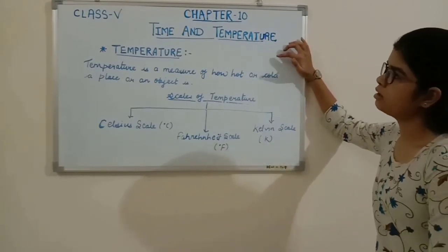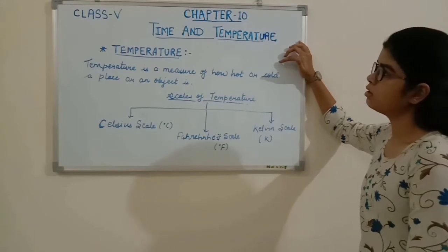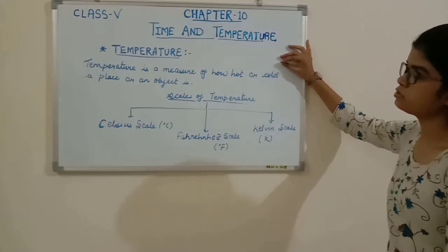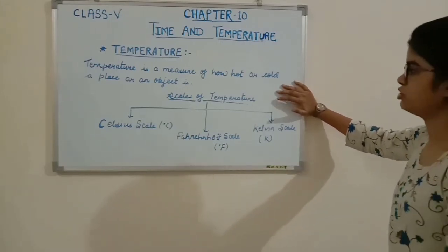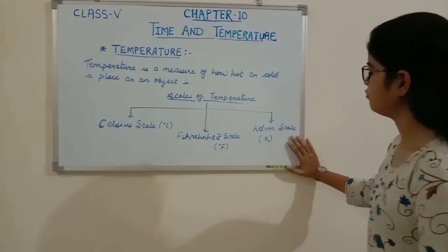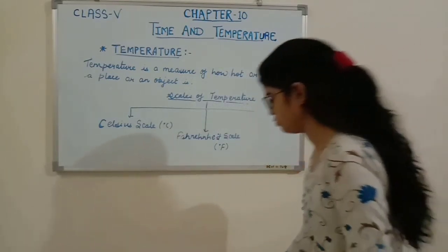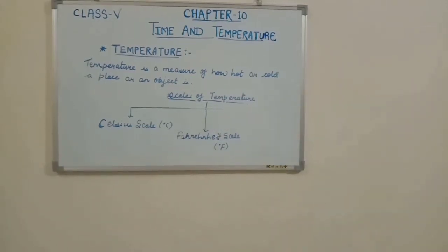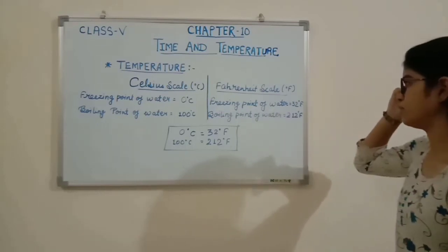Our next topic is Temperature. What is temperature? Temperature is a measure of how hot or cold a place or an object is. For the measurement of temperature, we use a device called a thermometer. There are different scales of temperature: the Celsius scale, the Fahrenheit scale, and the Kelvin scale. In your syllabus, the two major scales used in daily life are the Celsius scale and the Fahrenheit scale.